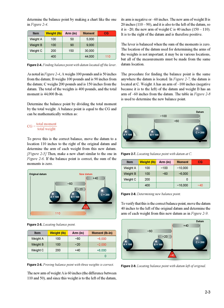In figure 2-7, the datum is located at C. Weight A has an arm of −100 inches (negative because it is to the left of the datum), and weight B has an arm of −60 inches from the datum. The table in figure 2-8 is used to determine the new balance point. To verify, move the datum 40 inches to the left of the original datum and determine the arm of each weight from this new datum, as in figure 2-9.